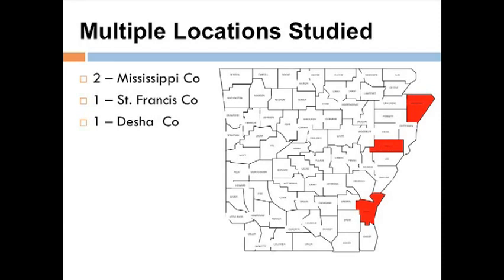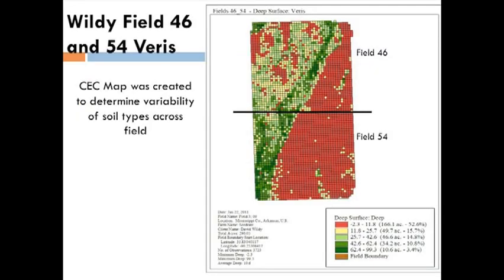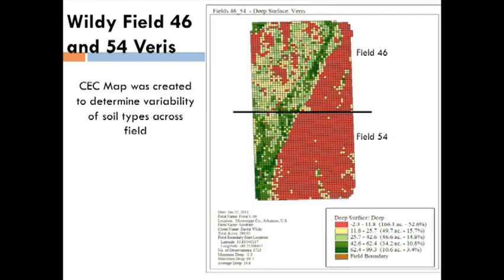We've done this across the state — four years in the making, in several different counties in Arkansas, and one location in Mississippi. Here's an example field on David Wildey's farm in northeast Arkansas in the Leachville area. This is an example of a bearish map, which tells us the difference in cation exchange capacity — we relate that back to a soil type. The red areas are the sandier areas of the field, and when you get to the dark greens, those are heavy areas, more clay-type soil.